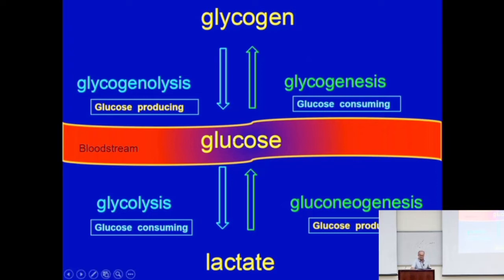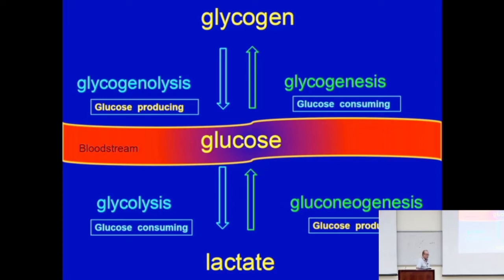Another process that also consumes glucose is glycolysis. Glycolysis consumes glucose by breaking it down into a smaller molecule known as pyruvate. When we talk about glycolysis, the first important question to ask is: what is glycolysis for? You should be able to say glycolysis is for getting energy out of glucose, and most tissues need that energy from glucose.